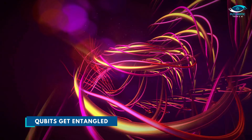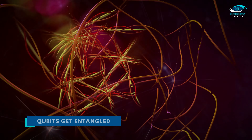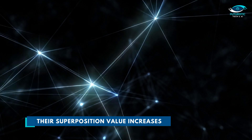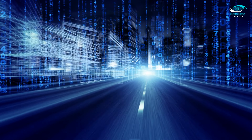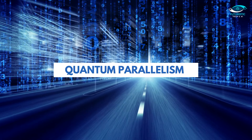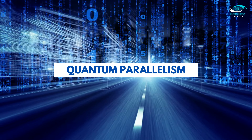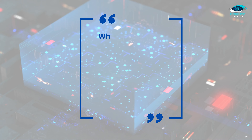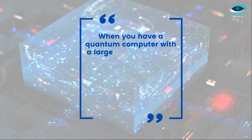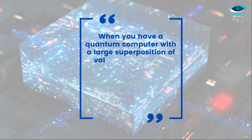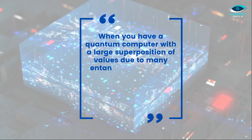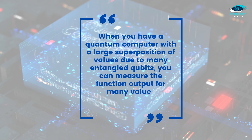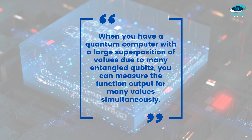Things get very interesting when qubits get entangled — their superposition value increases. One other thing from which we can benefit is quantum parallelism. According to quantum parallelism, when you have a quantum computer with a large superposition of values due to many entangled qubits, you can measure the function output for many values simultaneously.